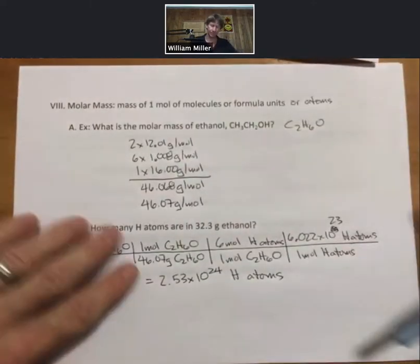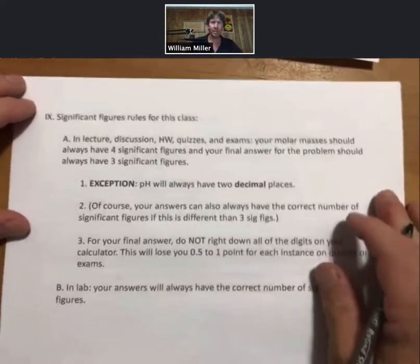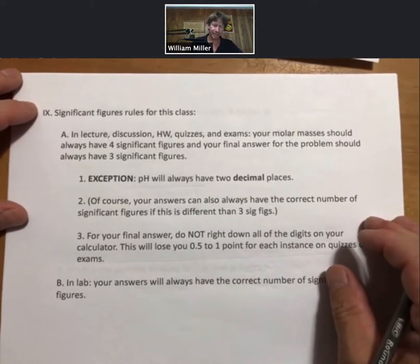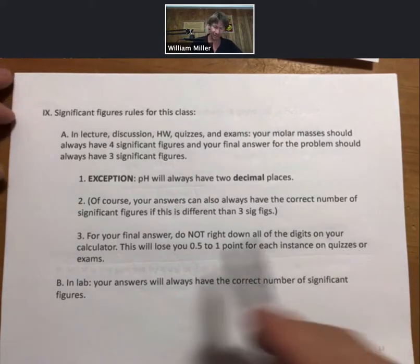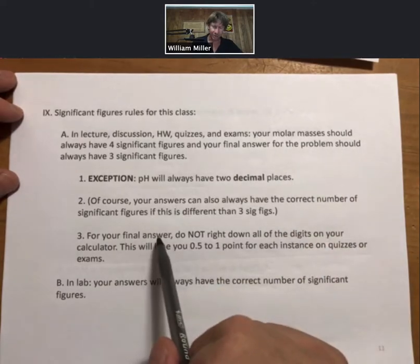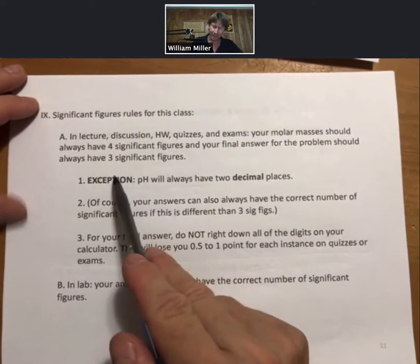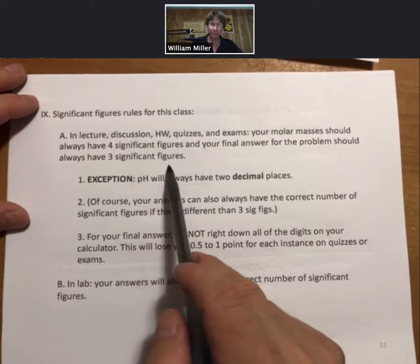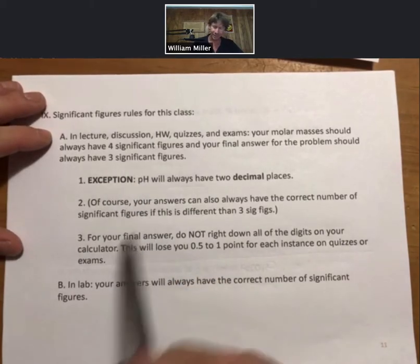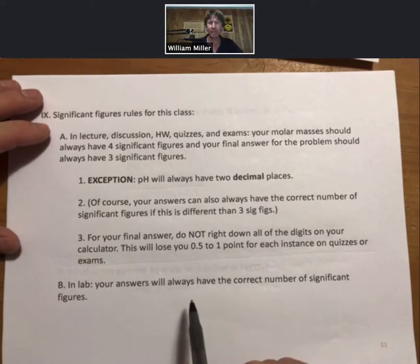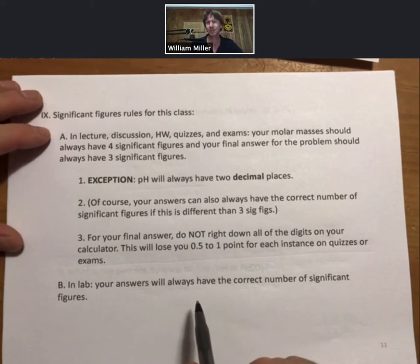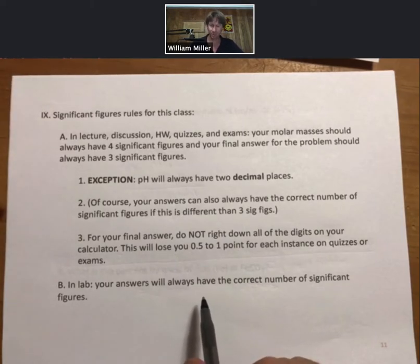More about sig figs. Sig figs rules for this class. You should be familiar with sig figs from your prerequisite for this. In lecture, discussion, homework, quizzes and exams, molar masses should always have four sig figs. Your final answer for the problem should always have three significant figures. That's usually what I'll give you in the problem statement. Exception: pH will always have two decimal places. In lab we'll always do them correctly.